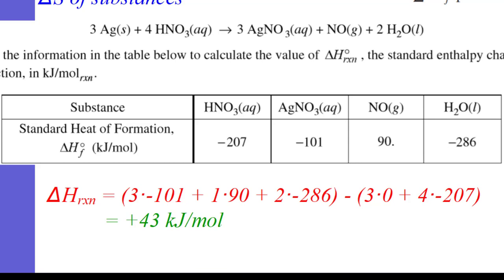Now you might ask, why don't they give us silver's heat of formation? Because it's zero. Any elemental substance, so silver, copper, hydrogen gas H2, oxygen gas O2. These all have standard heats of formation of zero. You can't form them. God already did.